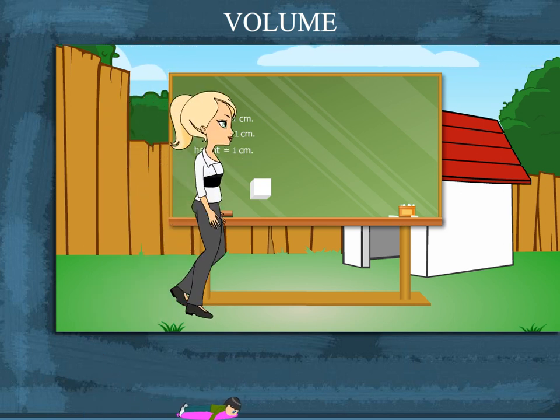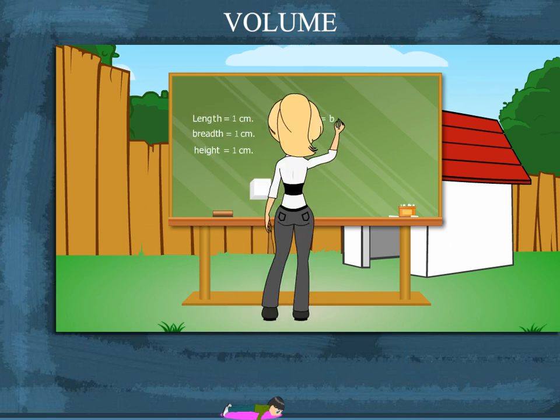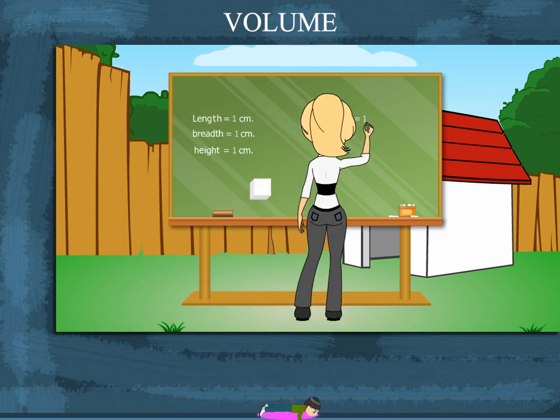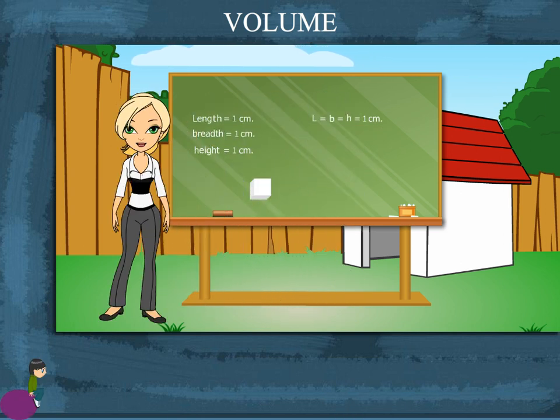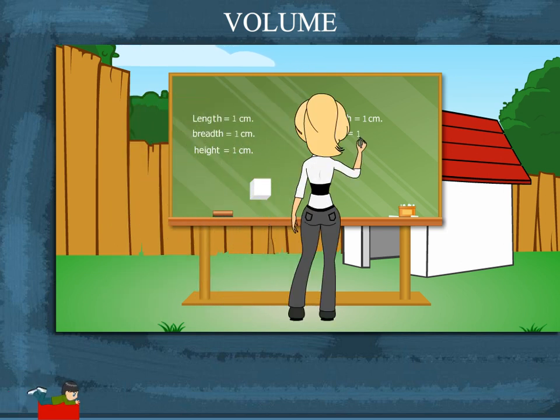So, the volume is length into breadth into height, or 1 into 1 into 1, which equals 1 cubic centimeter.